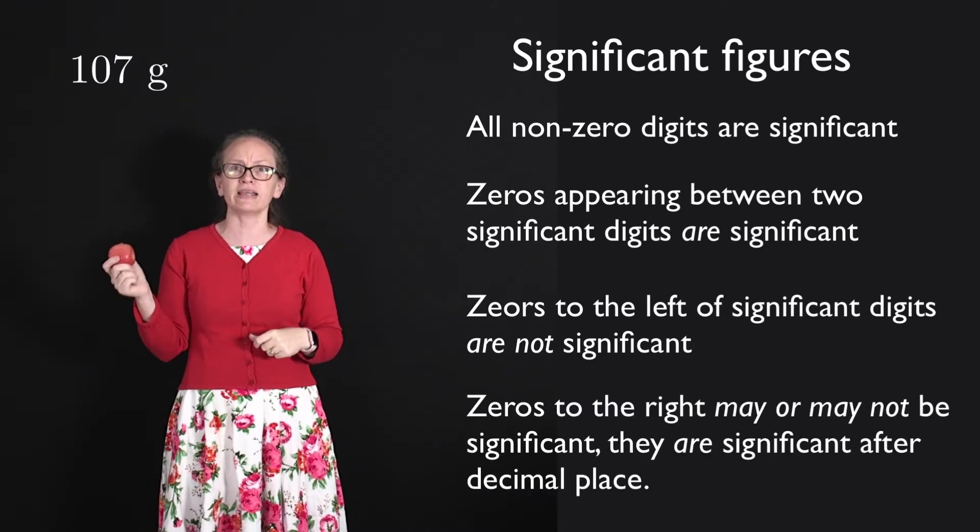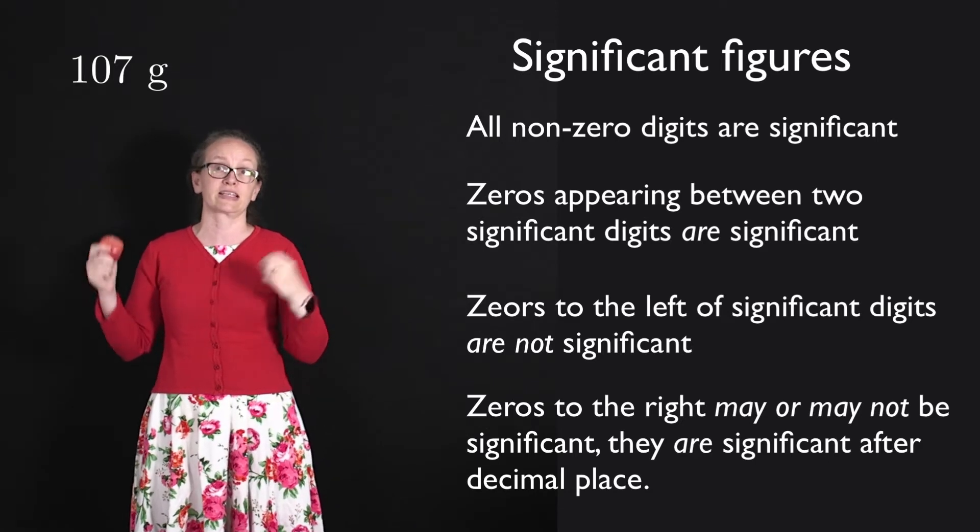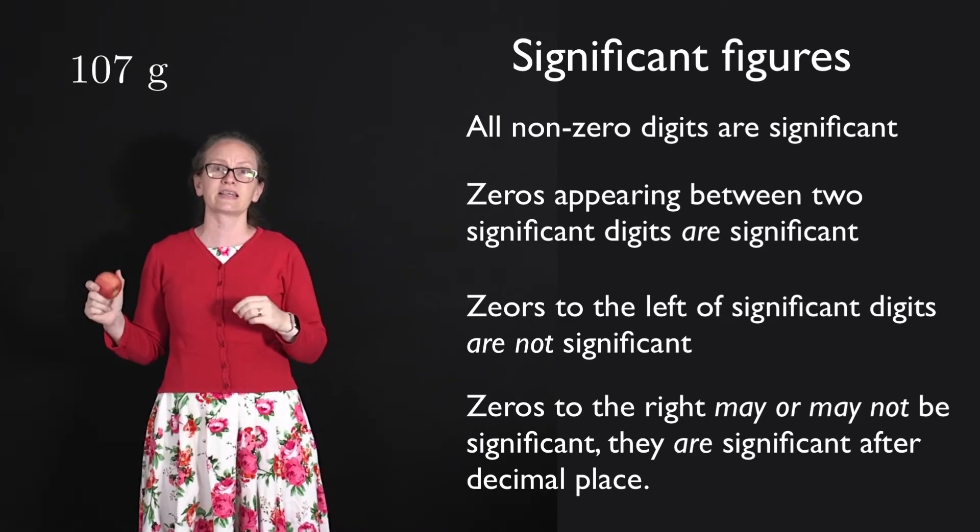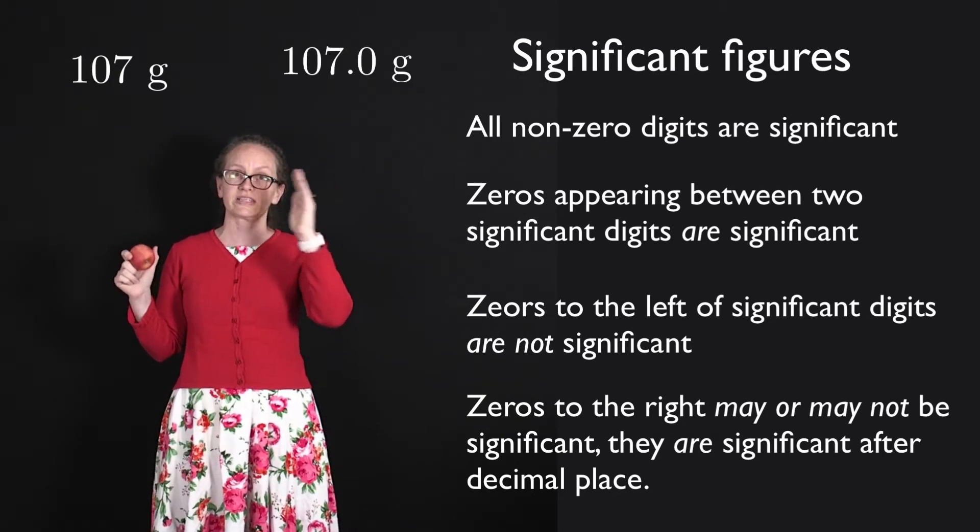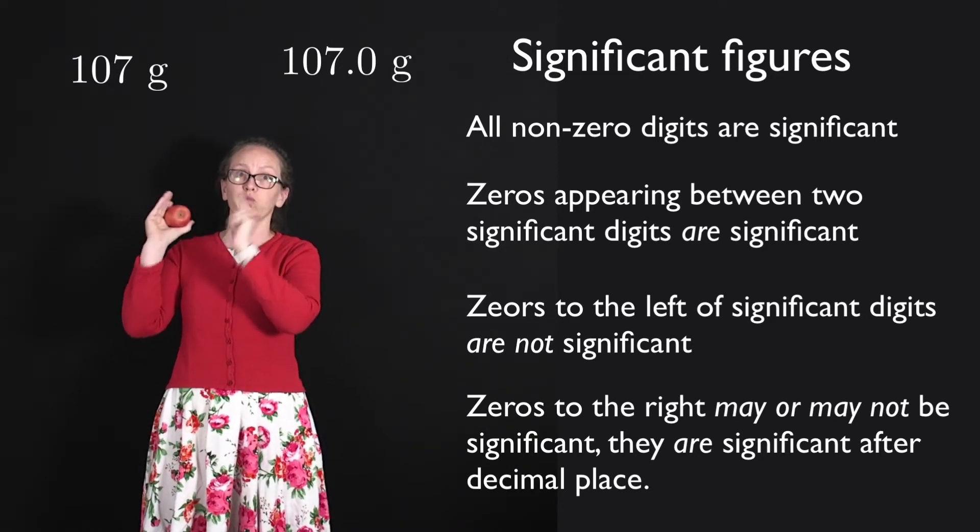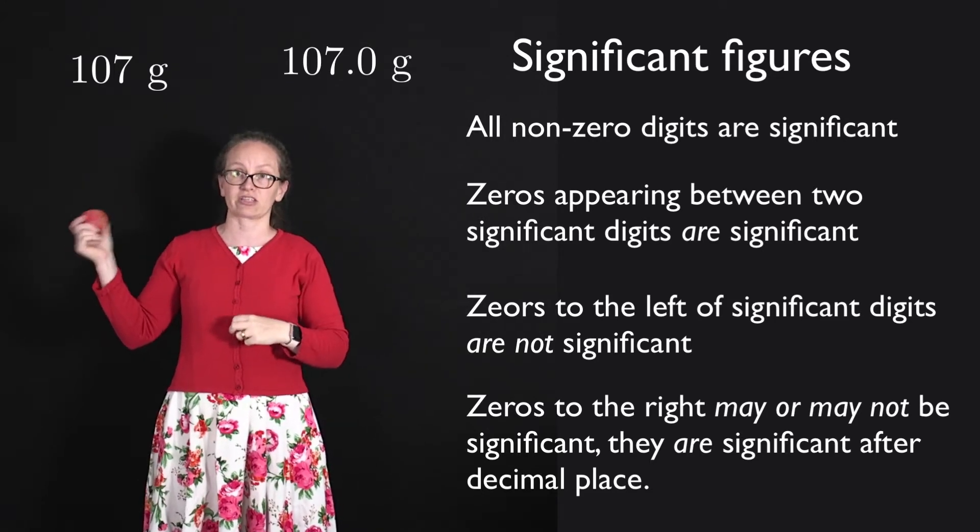Now zeros to the right of the significant figures may or may not be significant. There is some ambiguity there. If they're after a decimal place, then they are significant. So for example, if I wrote the mass of the apple as 107.0, that zero after the decimal place would be significant and that would be wrong for the case of my scales at home.